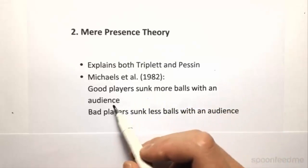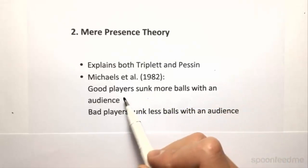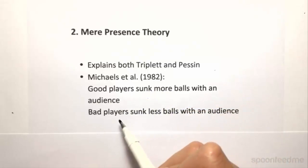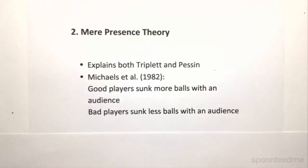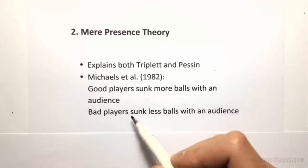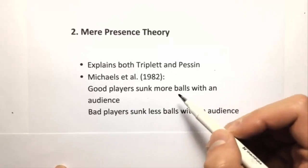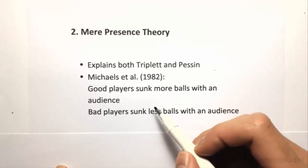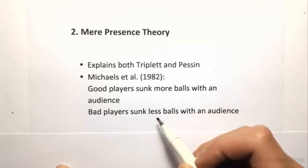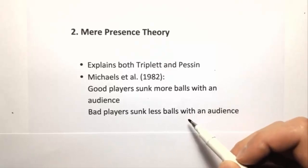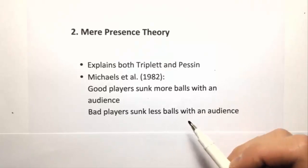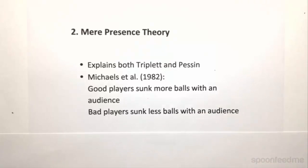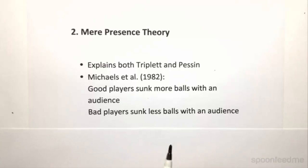He took a bunch of good basketball players and a bunch of bad ones, and gave them two conditions: one with an audience and one without. He showed that the good players sunk more balls with an audience, and the bad players sunk less — showing that with the presence of others, you can get both facilitation and inhibition.